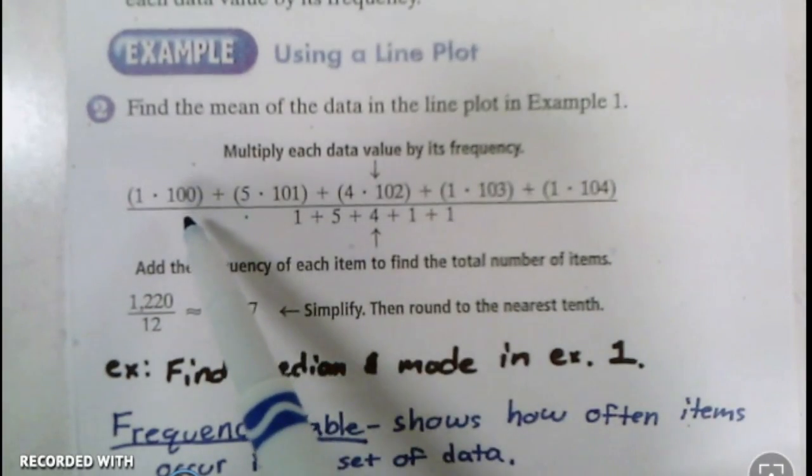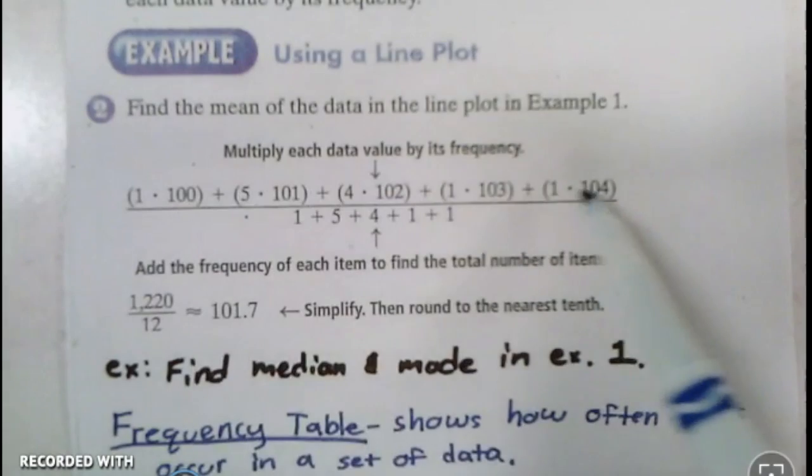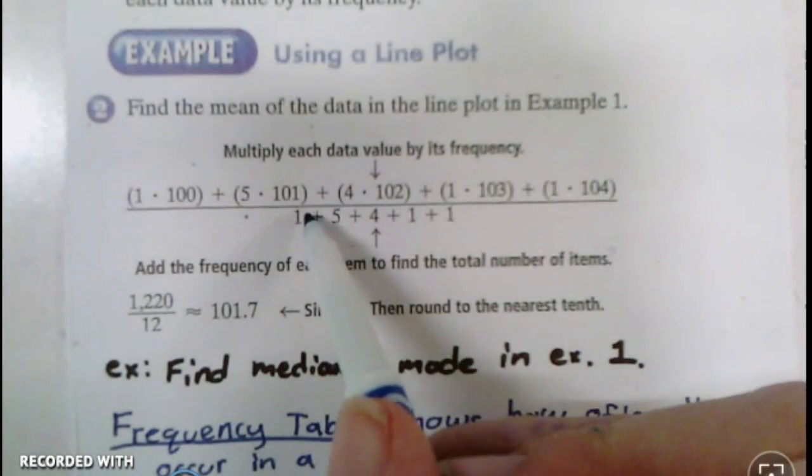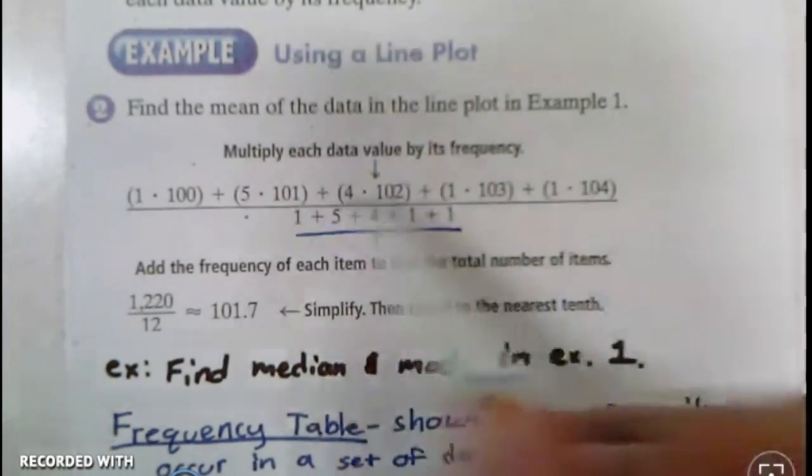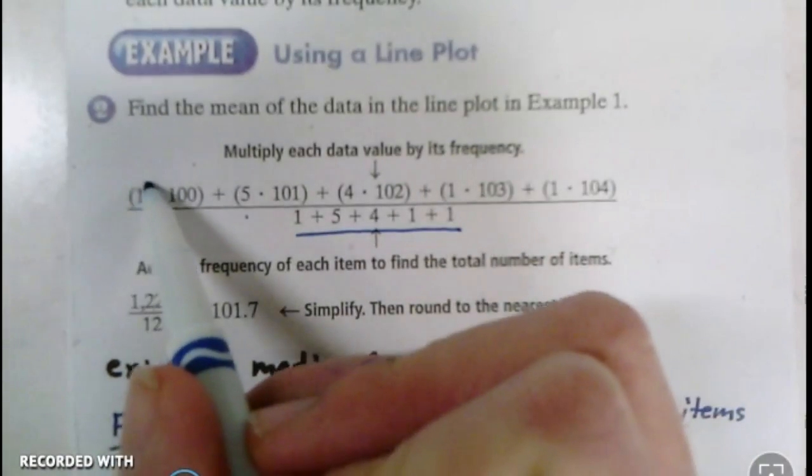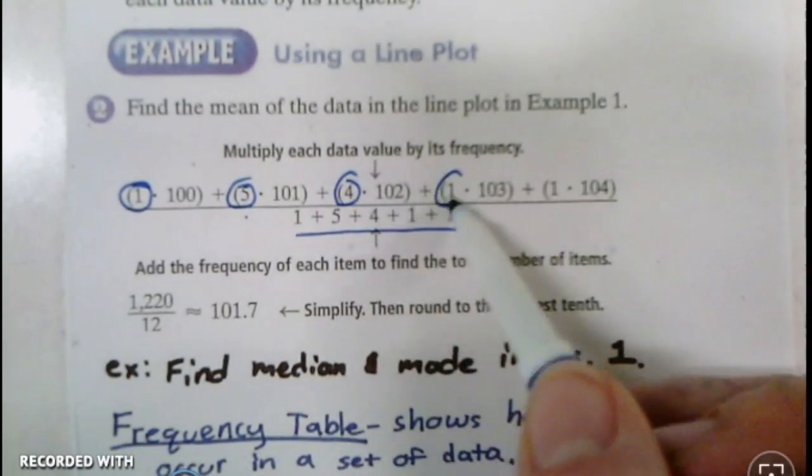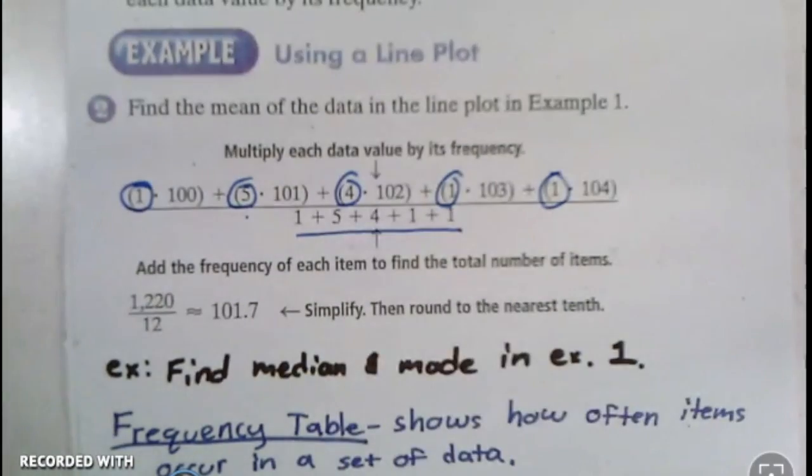We always multiply before we add. So we'll multiply all of those, then we'll add them together. On the bottom, we need to know how many numbers we actually were adding up here. That's going to be all these numbers: one, five, four, one, one. We're going to add all those numbers up.